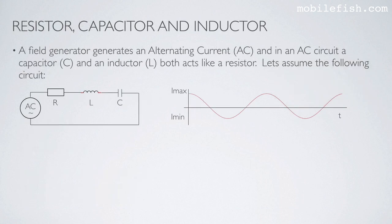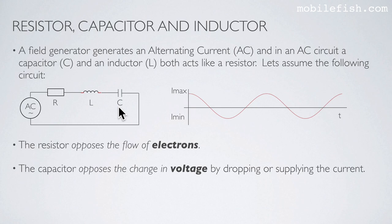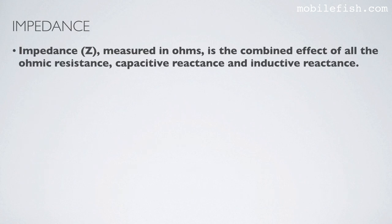A field generator generates an alternating current with a maximum and a minimum current. In an AC circuit, a capacitor and an inductor both act like a resistor. The resistor opposes the flow of electrons. The capacitor opposes the change in voltage by dropping or supplying current. The inductor opposes the change in current by dropping or supplying voltage. The impedance, measured in ohms, is the combined effect of all the ohmic resistance, capacitive reactance, and inductive reactance.